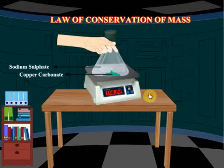This is very important — it is called the law of conservation of mass. Let's now move on and learn a second law that will help us understand the combination of atoms and molecules. This law is called the law of constant proportions.